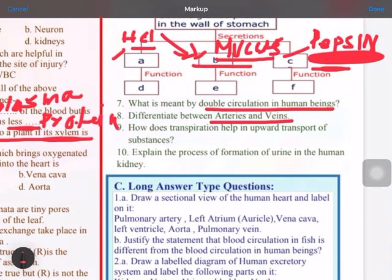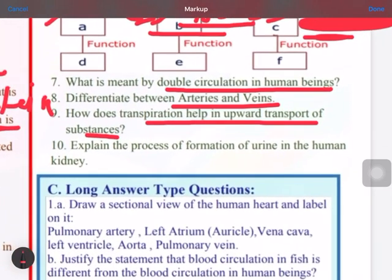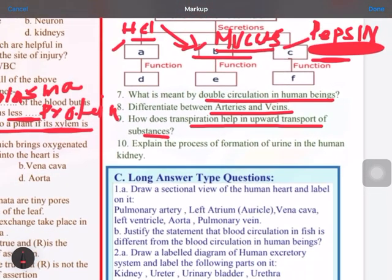How does transpiration help in upward transport of substances? So this transpiration creates an upward pressure. Because when the transpiration is occurring, if this is the xylem tube and here the water which is present, by the process of sunlight, because of the heat of the sunlight, rises up in the form of vapor. So that this space becomes empty. So the water which is present here in the roots will rise by the concentration gradient from the higher pressure to the lower pressure. So this is how the transpiration is helping.